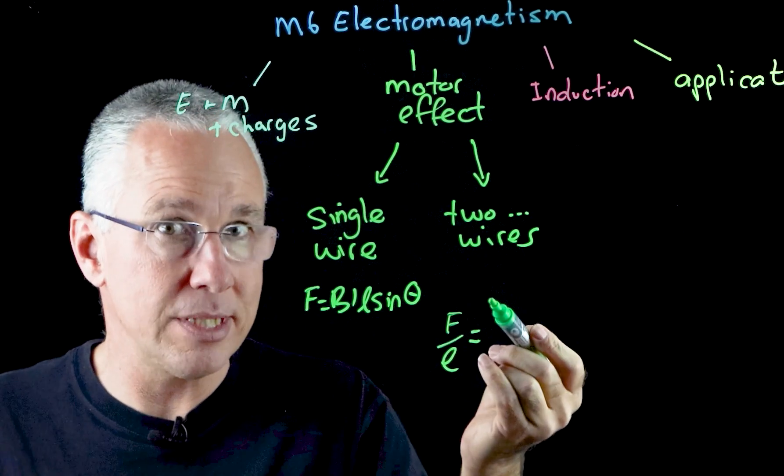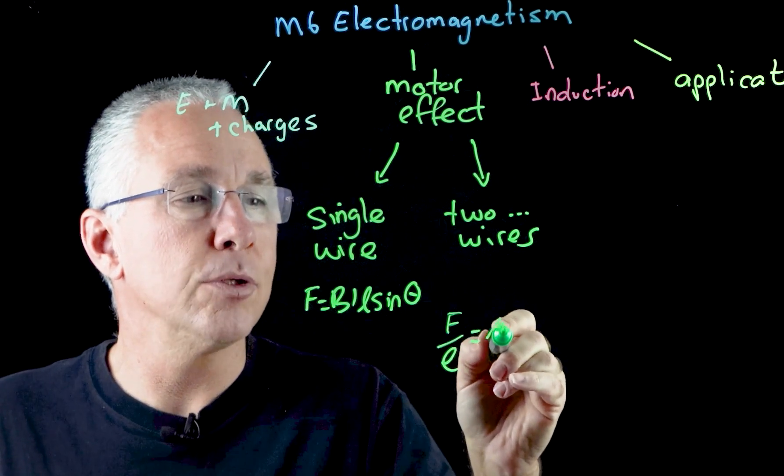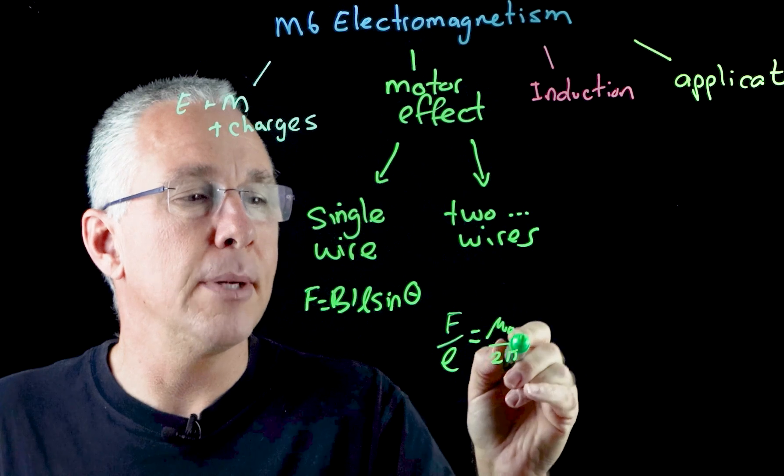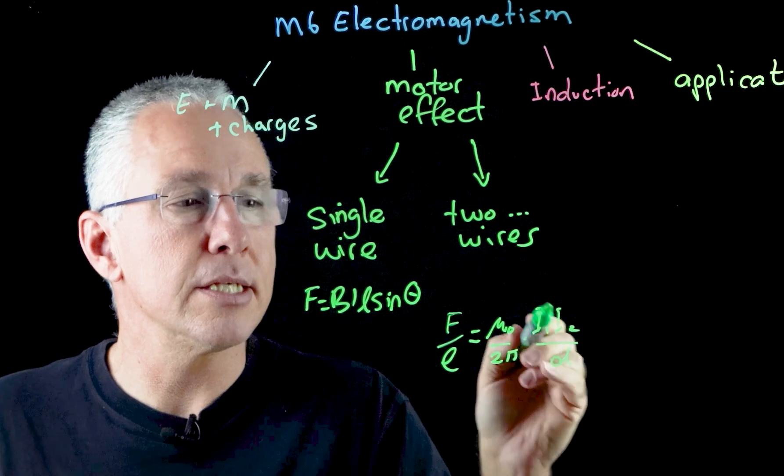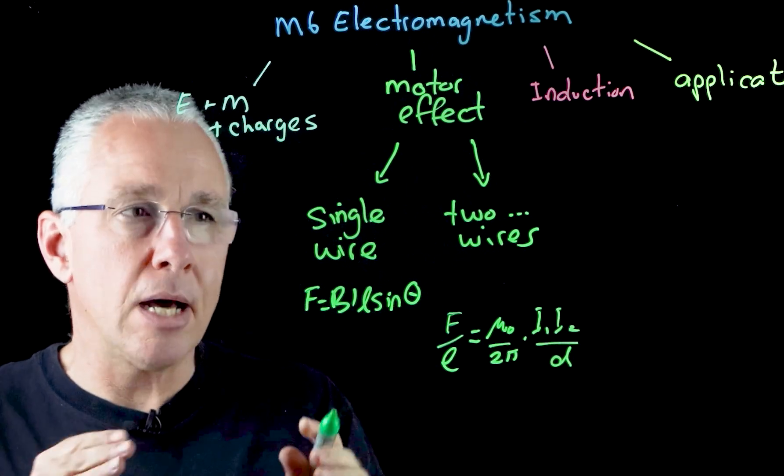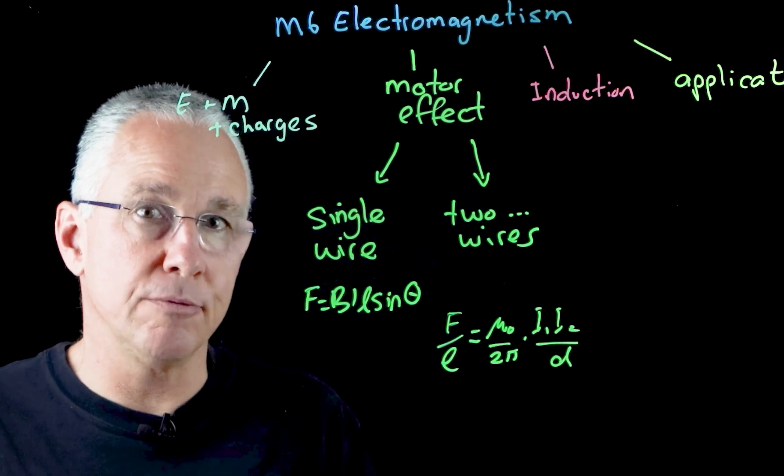We get the formula that the force per unit length is equal to k, is sometimes written at that, but we are going to use the value of mu naught over two pi multiplied by the individual currents all over the distance between them. Now you'll need to know how to use those particular formulas here.